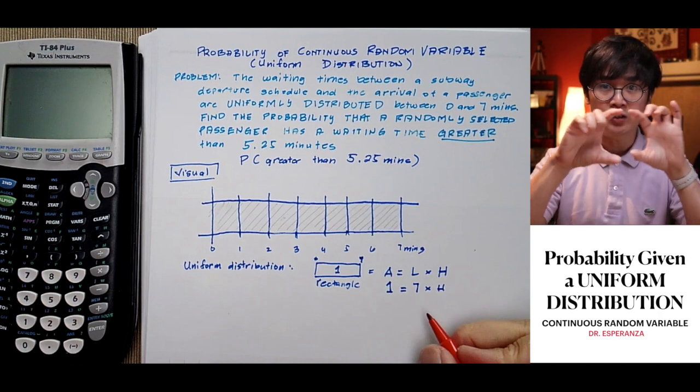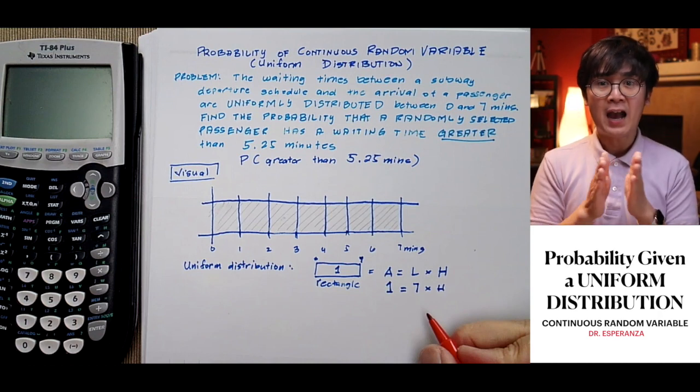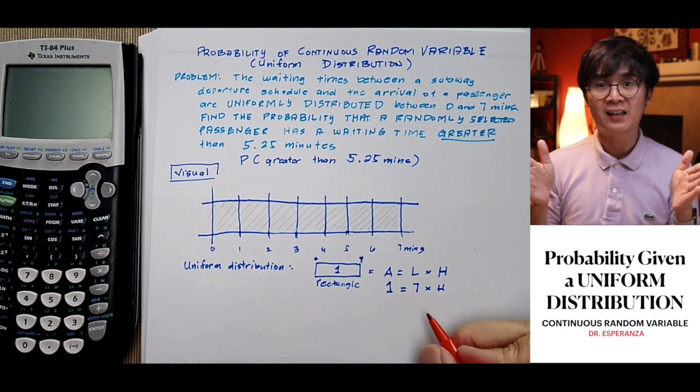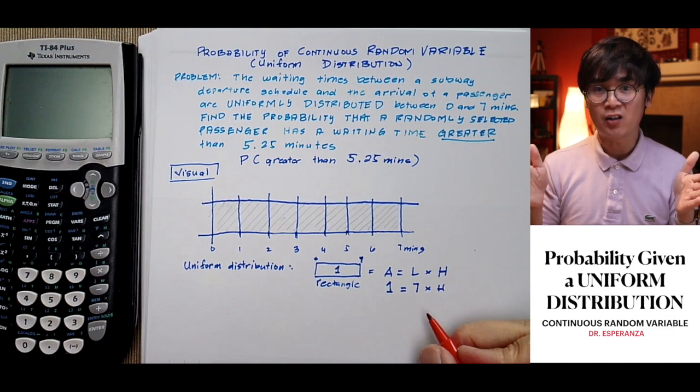The area of the whole rectangle equals 1, and we know the length of our rectangle, which is 7 units.